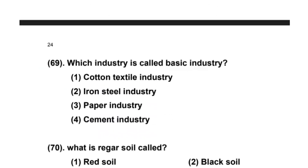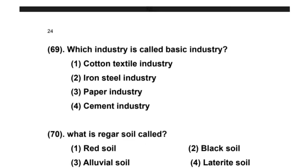Which industry is called the basic industry? Options: 1) Cotton textile industry, 2) Iron and steel industry, 3) Paper industry, 4) Cement industry. The right answer is option 2 — Iron and steel industry is called the basic industry.